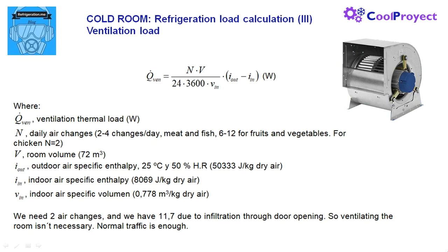In this case for chicken fillets we need around 2 changes per day. Since we need 2 air changes and due to infiltration we have 11.7, then ventilating isn't necessary for our cold room. The normal traffic air infiltration is enough. If it weren't good enough we should install a ventilation system and take into account this additional thermal load.